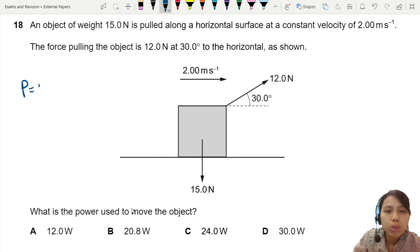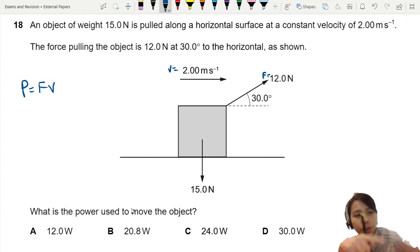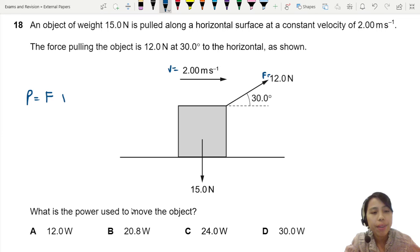We know P equals FV because we have V and we have F. But there is a condition to use this equation. The condition is that F and V must be in the same parallel direction.